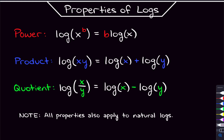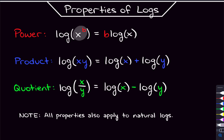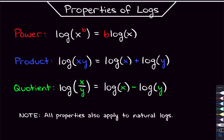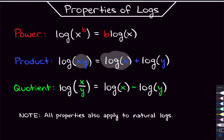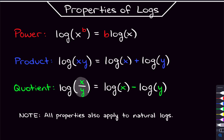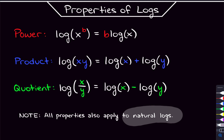Before we get into these problems, we have to talk about what the properties of logarithms actually are. The first property has to do with powers: if the argument of the log has a power on it, you can bring that out front and multiply it. The product property says that if you have two things being multiplied inside the log, you can split this up into two separate logs — just make sure you add them together. And with the quotient property, you have two things being divided inside the log, so you split the logs up again, but this time you subtract them. All of these properties work for natural logs as well.